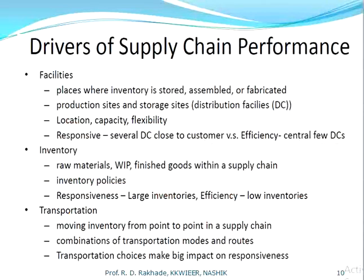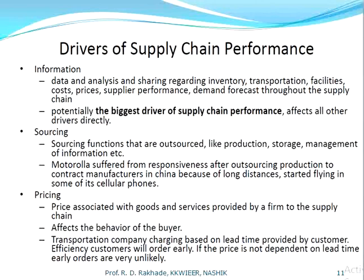The key performance drivers of supply chain management include: facility — regarding layouts; inventory — involving inventory policies and stock levels; transportation — the movement of raw materials, semi-finished, and finished products along their routes; information — the biggest driver, which affects all other drivers directly; sourcing — outsourcing functions such as production and store management; and pricing — the price associated with goods and services provided by the firm to the supply chain.